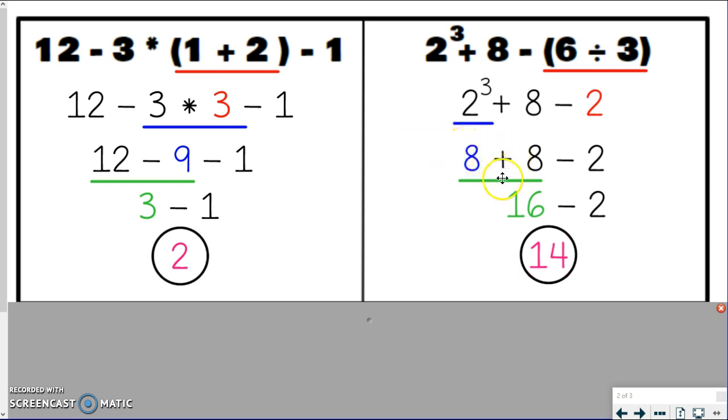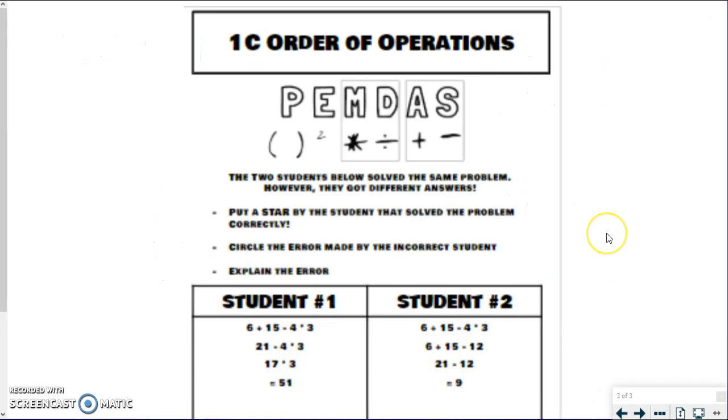So now I have 8 plus 8 minus 2. I have addition and subtraction. So I'm not doing addition first because it's addition. I'm doing it first because when I move left to right, that's what I come to first, is addition. So 8 plus 8 is 16. 16 minus 2 gives me 14. And so that's my answer. I hope you got the same. If not, pause, go back, take a closer look. But if you're ready, move on to the next page,